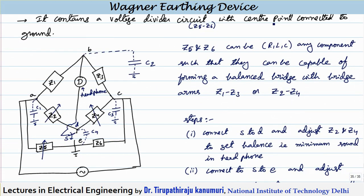What is the Wagner earthing device? The Wagner earthing device consists of a voltage divider circuit that is extra to the previous circuit. It has two impedances Z5 and Z6 connected in series, whose center point is connected to ground. From that ground point we take a terminal E. The detector — which is replaced by a headphone so we can easily listen to the sound (sound indicates not balanced, no sound indicates balanced) — is not directly connected to D. Instead it is taken out and connected through a switch, which can be either connected to D or to E.